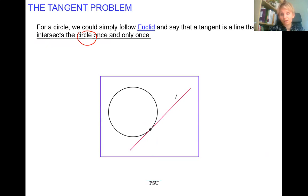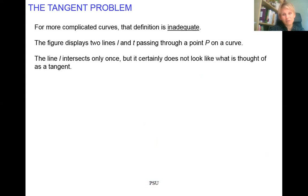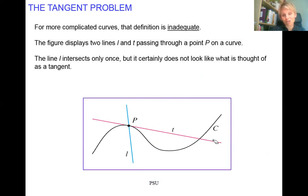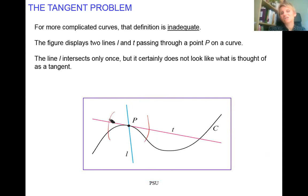But what happens when we have a more complex curve? Euclid's definition is not really adequate. Looking at a curve, the blue line intersects the curve only once, but it is not a tangent — we all have an intuitive sense of what a tangent means. And the pink line T intersects the curve twice, so by Euclid's definition it should not be a tangent. However, when we use the limit — limiting our view to the neighborhood of point P — the curve and the line appear to intersect only once near P.